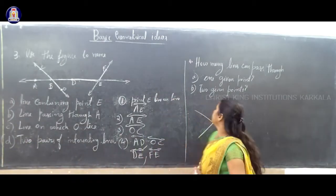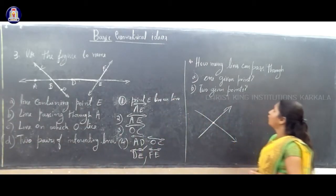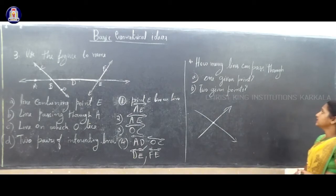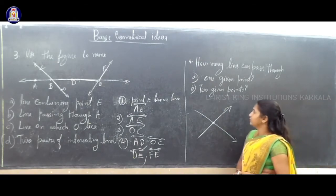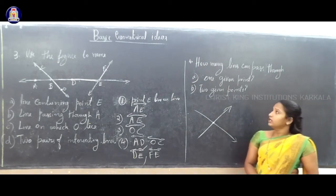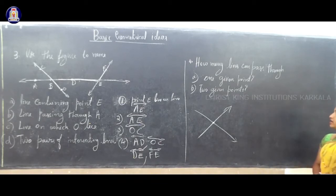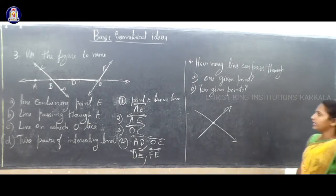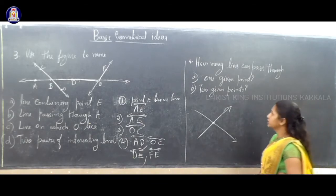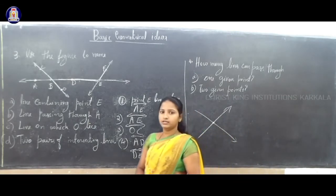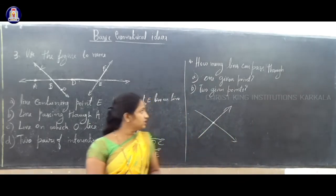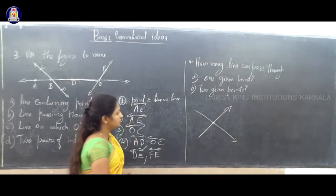Now we will see the fourth question: how many lines can pass through — first, one given point; and second, two given points.